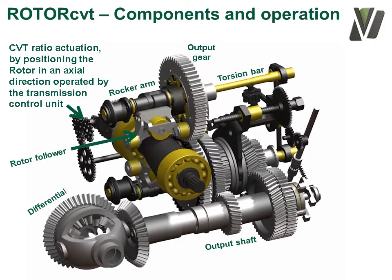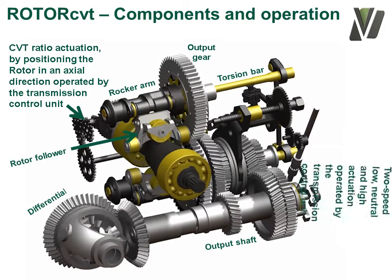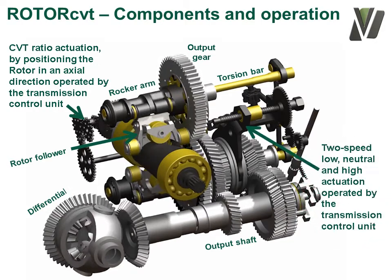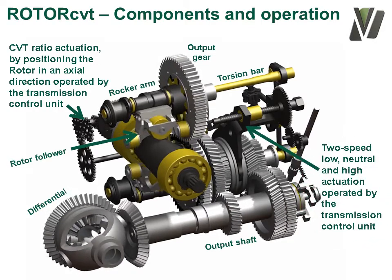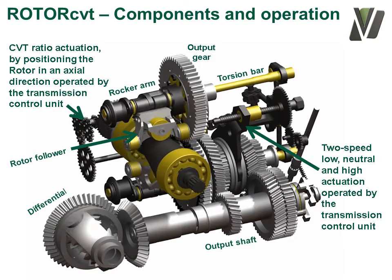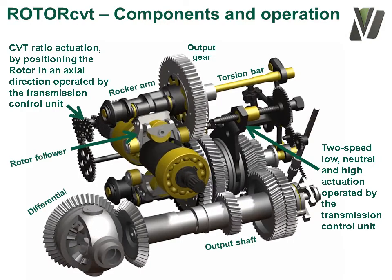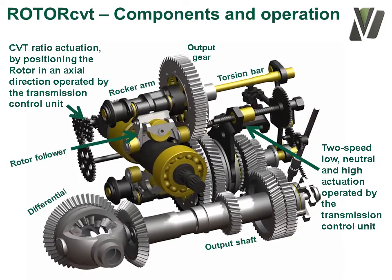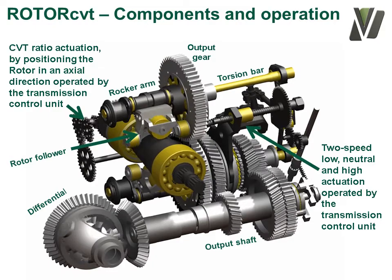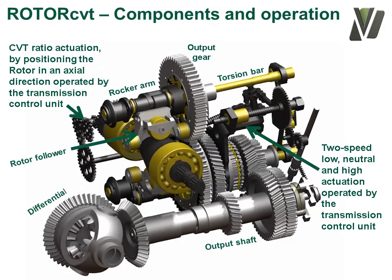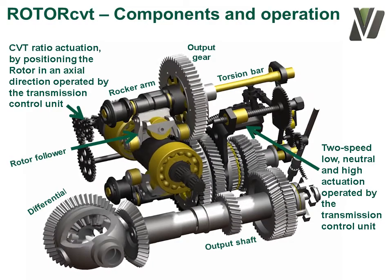Note that the two-speed gearbox is in the first ratio position, the most right position. In order to further increase the speed of the vehicle, the rotor will move backwards to about halfway of its range.